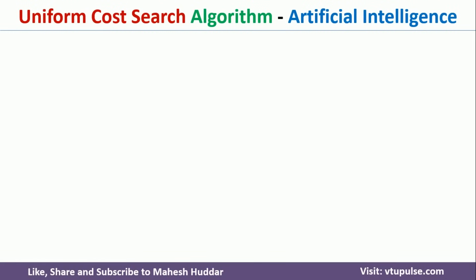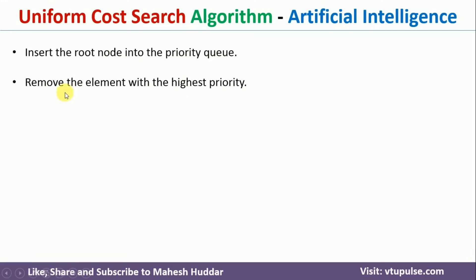The following is the process we will use to get the optimal path in Uniform Cost Search. First, we insert the root node into the priority queue. From the priority queue, we remove the element with the highest priority. At the initial stage we will have only the root node, but after a certain period of time we may have more than one node in the priority queue, so we remove the node with the highest priority at that point.